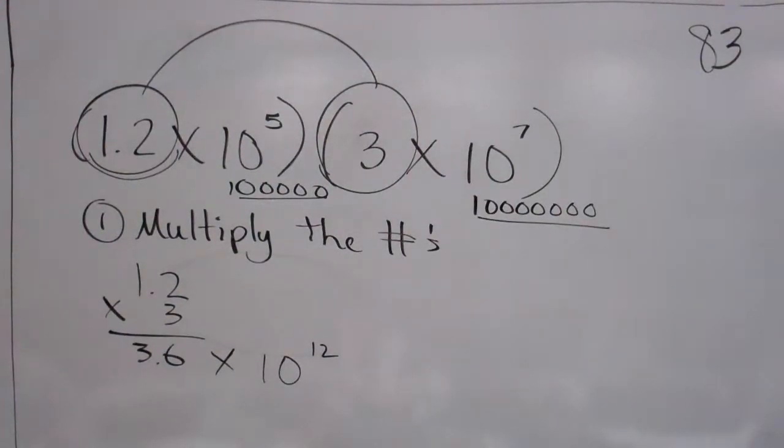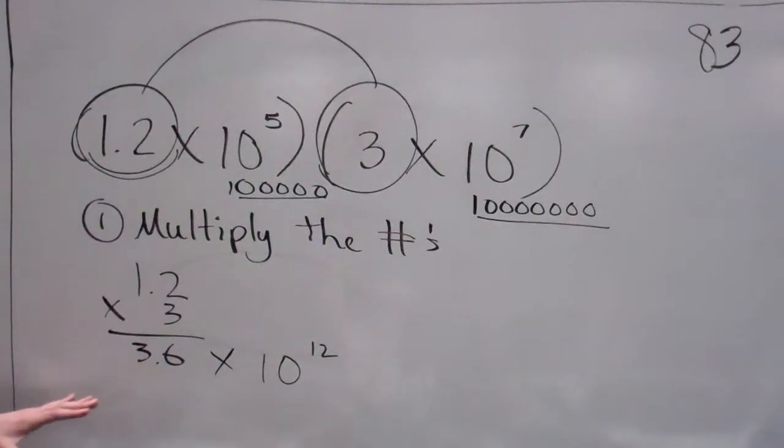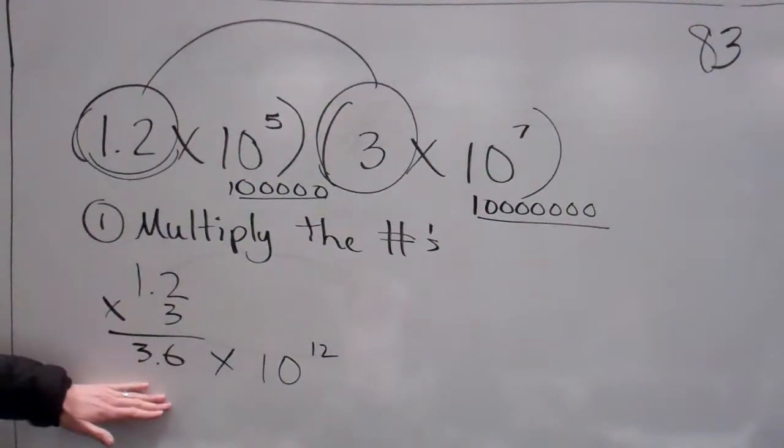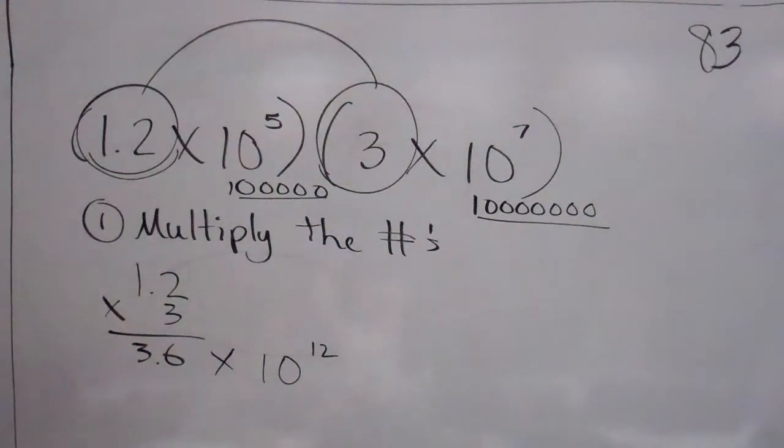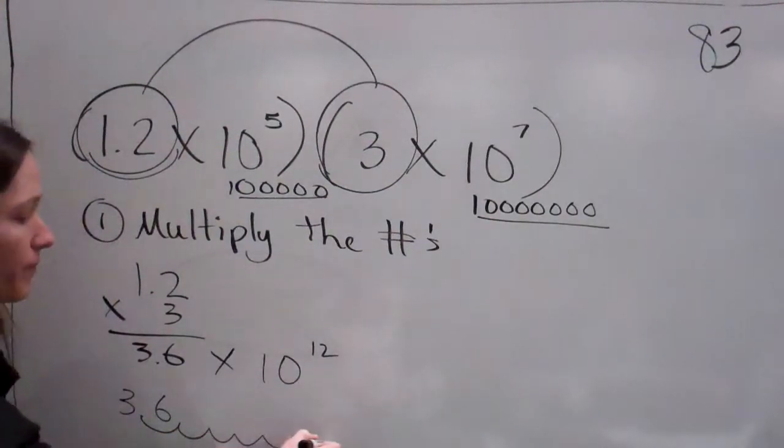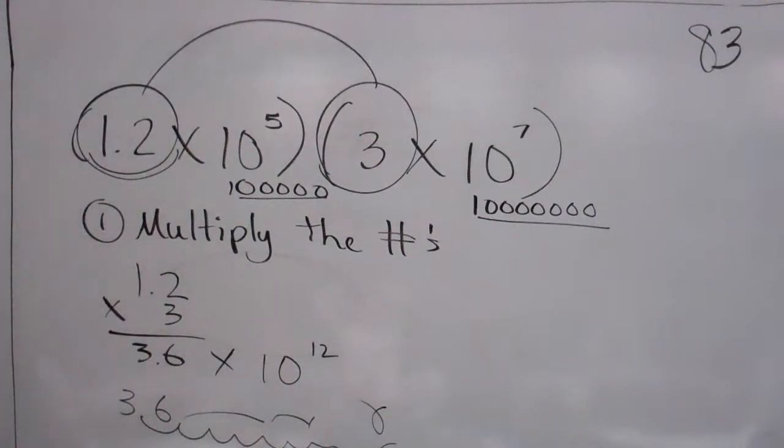We're not actually, they didn't tell us to put it as a standard number. They just told us, it says multiply this. And so if they don't say answer in standard, as a standard number, you would just answer like this. Does everybody understand what we did? We would do 3.6 and then move this 12 times and fill them in with zeros. That is, yes?